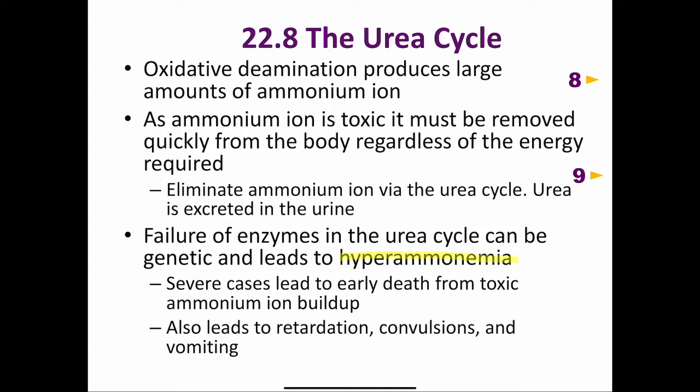If there is a complete deficiency of one of the enzymes of the urea cycle, the result is death in early infancy. If there is a partial deficiency of one of the enzymes of the urea cycle, the result may be mental challenge, convulsions, and vomiting.